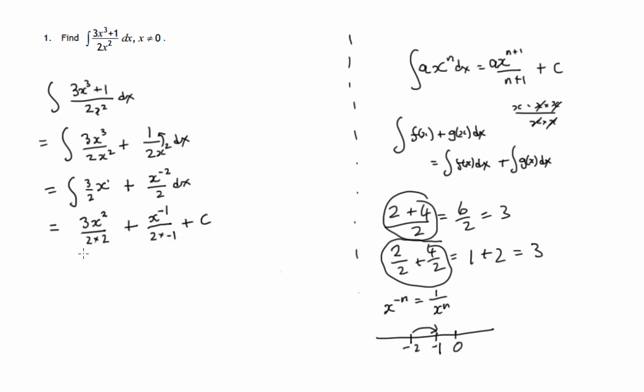Remember, always the constant of integration. So we've now got 3 quarters of x squared. This x to the negative 1 goes down to the bottom of the fraction and becomes x to a positive 1, just an x. And the 2 times negative 1, that would be negative 2x plus c.